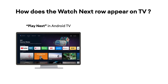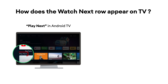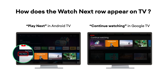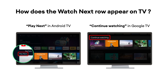So, how does the Watch Next row appear on your home screen? The naming and appearance is slightly different in Google TV and Android TV, but the API implementation is the same. So, as app developers, there is no extra effort required from your side.